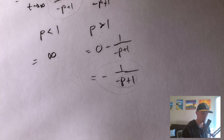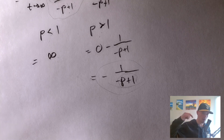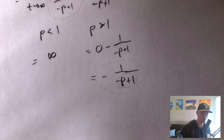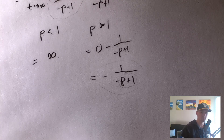So this is helpful to know — when p is greater than 1, the entire integral from 1 to infinity simplifies down to negative 1 over negative p plus 1. This uses one of the formulas on my Calculus 2 study guide. There's a link in the description where you can download it right now and start using it today. Thanks, and see you next time.